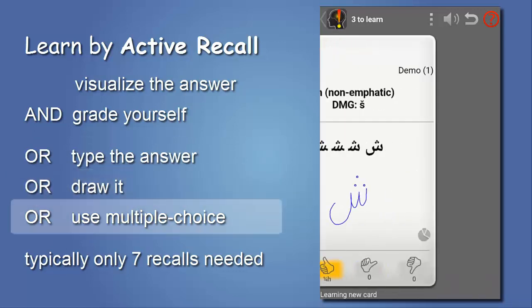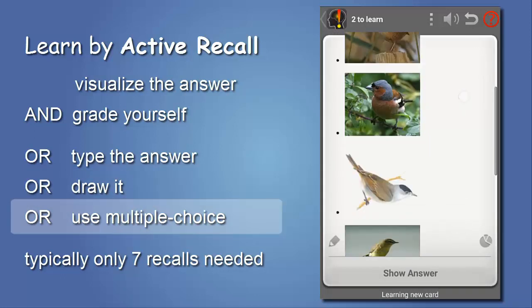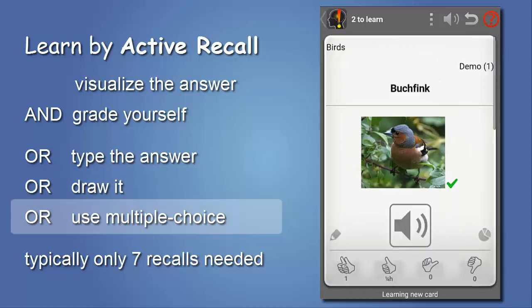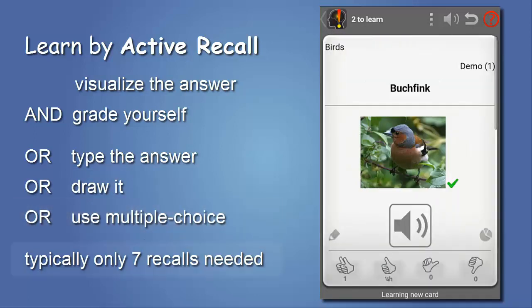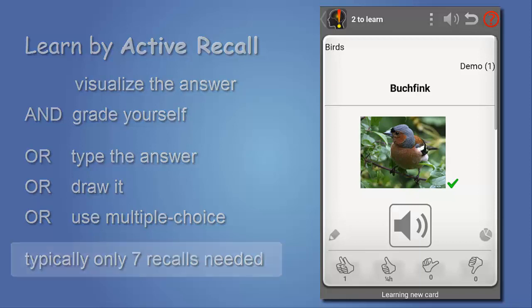Multiple choice can be used for images, formulas, or proverbs. The interval between reviews typically doubles to triples, and within seven recalls you reach intervals of several years. That makes it so efficient.